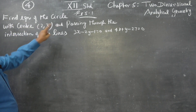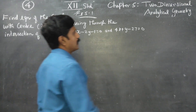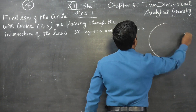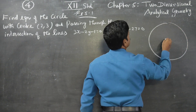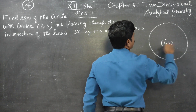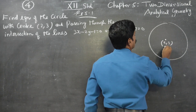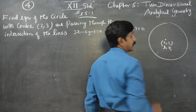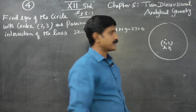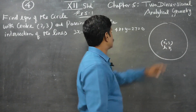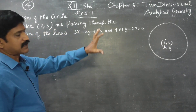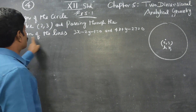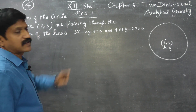Find the equation of a circle with the center (2, 3). I want the equation of a circle with center (2, 3). Therefore H is 2 and K is 3 — those are my center notations. The center is (2, 3), and the circle passes through the intersection of two lines.